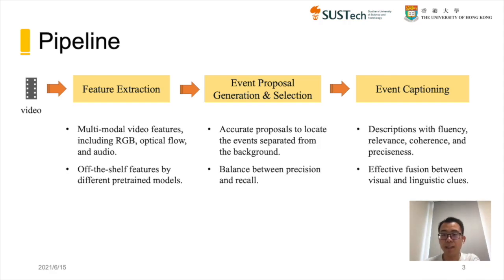Specifically, in the stage of feature extraction, multi-modal representations including RGB, optical flow, and audio are extracted offline, relying mainly on pre-trained models for different pre-training tasks. In the stage of event proposal generation and selection, we need high-quality proposals to locate events separated from the background, while considering the balance between precision and recall. Finally, in the stage of event captioning, we hope to generate event descriptions that are fluent, relevant, coherent, and precise — related to a fusion of visual features and linguistic clues.